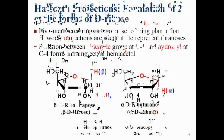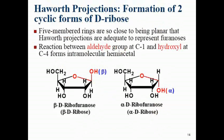Another example is the cyclic form of D-ribose. Ribose is a pentose, so it forms a five-membered furanose ring. The reaction is between the aldehyde at carbon 1 and the hydroxyl of carbon 4. The aldehyde carbon becomes a new stereocenter — the anomeric carbon — and again the OH can be drawn either below (alpha) or above (beta) the ring.